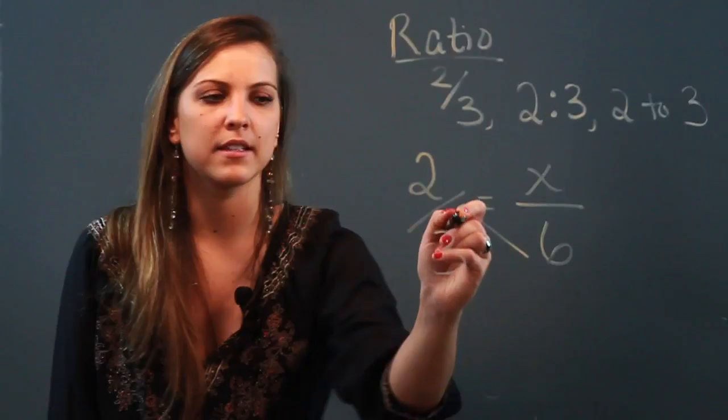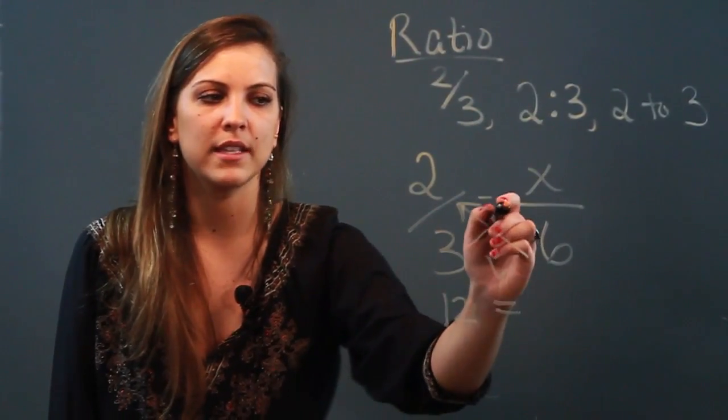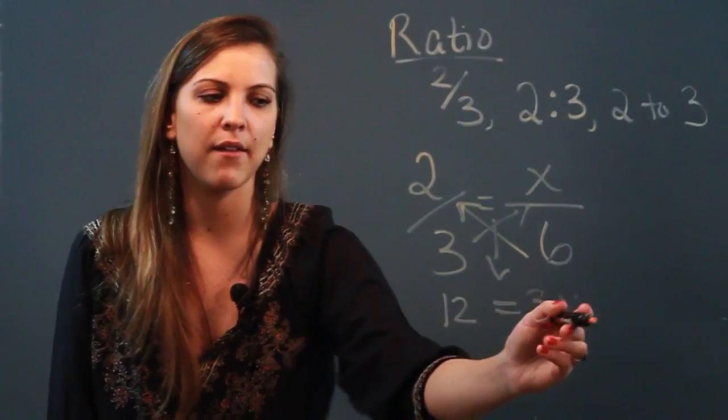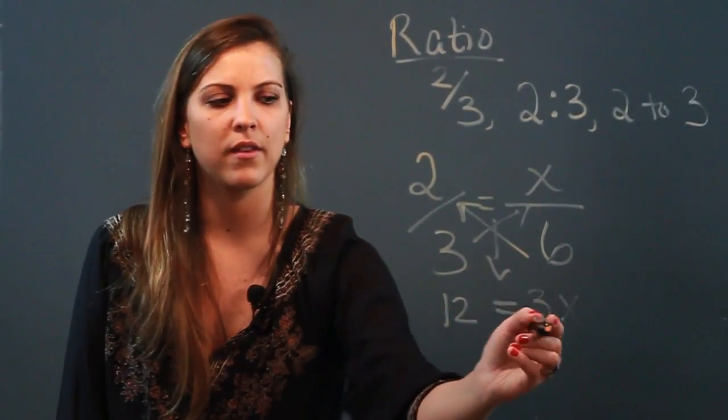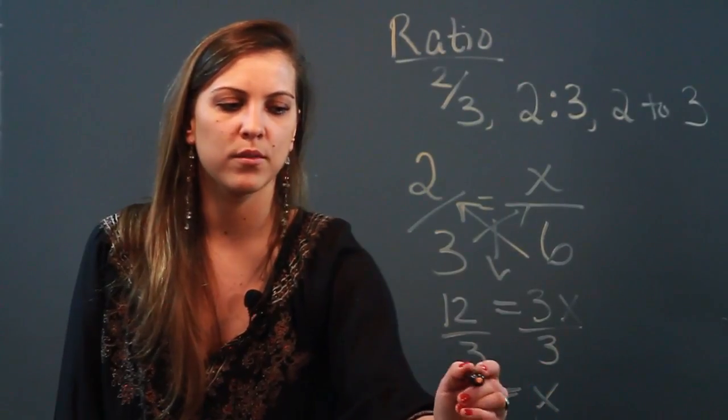And now I cross multiply. Six times two is 12. Bring down my equal sign. Three times x is 3x. And now I have a one-step equation that I know how to solve. I divide both sides by three and I get x equals four.